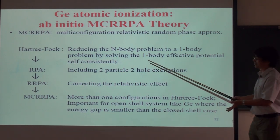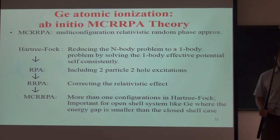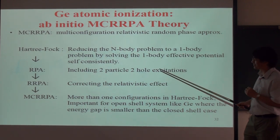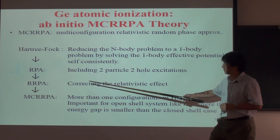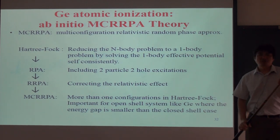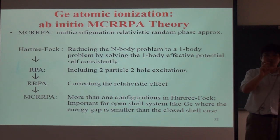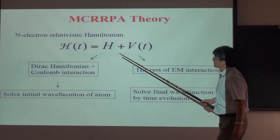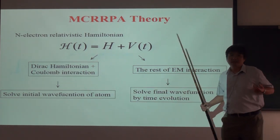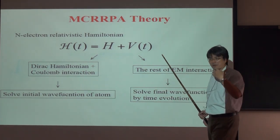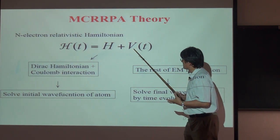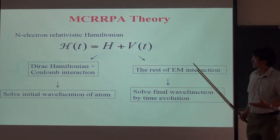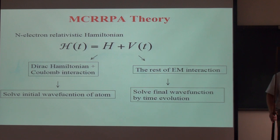So a single electron will see an effective potential formed by all the other electrons and the nucleus. And this solves self-consistently. Then you can include some quantum corrections, like two particle two hole excitations. Then you can correct for the relativistic effect from the RPA. Then the germanium actually has two electrons outside the closed shell. So they could be different initial states. You can write down a linear combination of the two and try to solve the combination self-consistently. So this is a sophisticated procedure.